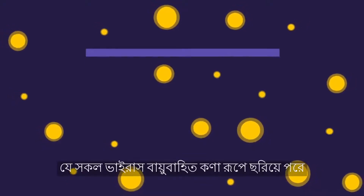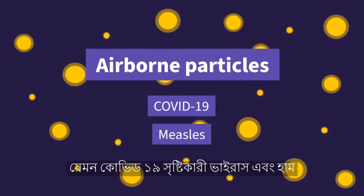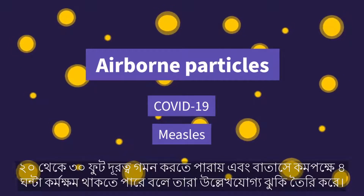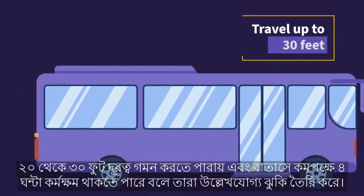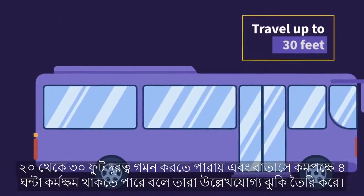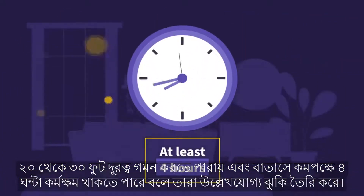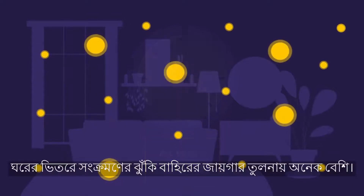Viruses that transmit as airborne particles, such as the viruses that cause COVID-19 and measles, pose a significant risk as they can travel long distances — up to 20 to 30 feet — and stay active in the air for at least four hours. The risk of transmission while indoors is much higher than in outdoor spaces.